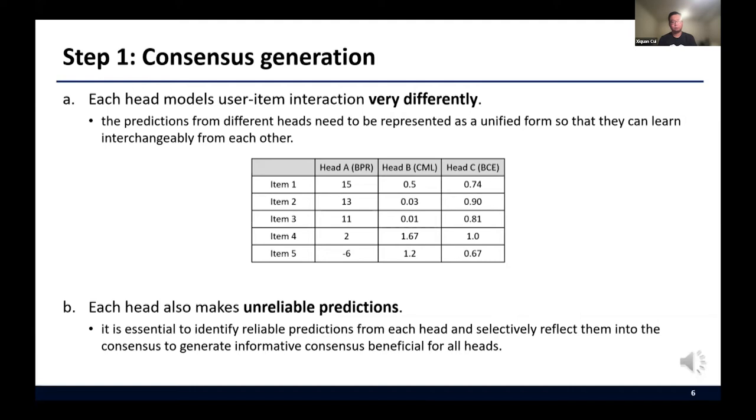Second, we should note that each head also makes unreliable predictions. Therefore, it is essential to identify reliable predictions from each head and selectively reflect them to generate informative consensus beneficial for all heads. Without considering the reliability, the consensus will contain incorrect predictions and providing inaccurate supervision for the heads.